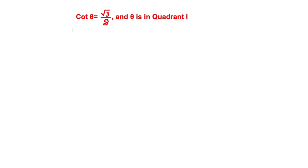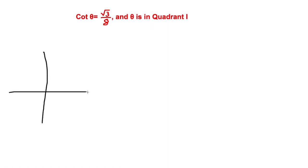We are given that cotangent of theta equals square root of 3 over 8, and theta is in quadrant 1. We'll draw the x and y coordinate plane. In quadrant 1, theta is placed, so we draw the line down and then draw a right triangle.